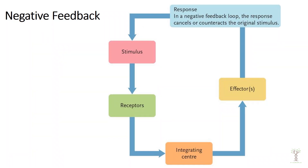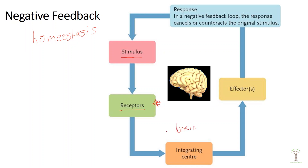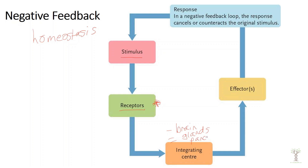Let's look at a negative feedback loop. A negative feedback loop is the main way that we regulate all kinds of factors inside of our body. In a negative feedback loop we always have the same order of things: first we have some kind of a stimulus. That stimulus triggers specific receptors, which send information to an integrating center — most of the time some region of our brain, but it could also be glands like the adrenal glands, or the pancreas.